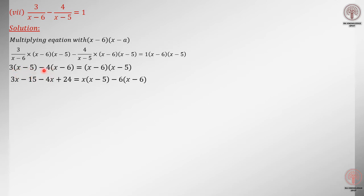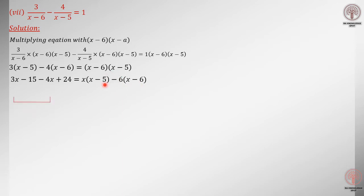After multiplication: 3x minus 15, minus 4x, plus 4 equals x squared minus 5x minus 6x plus 30, and 1 multiplies with (x minus 6)(x minus 5). I am doing all steps because some students are not very confident with this. If you feel capable enough, you can multiply directly — no problem.